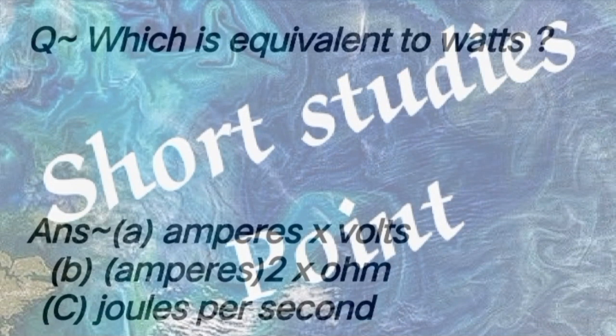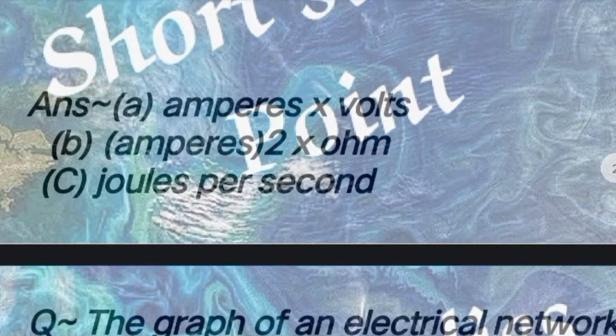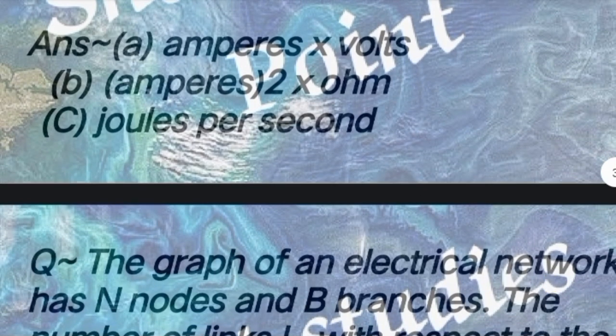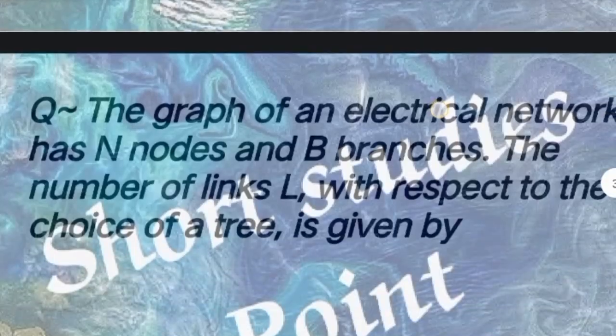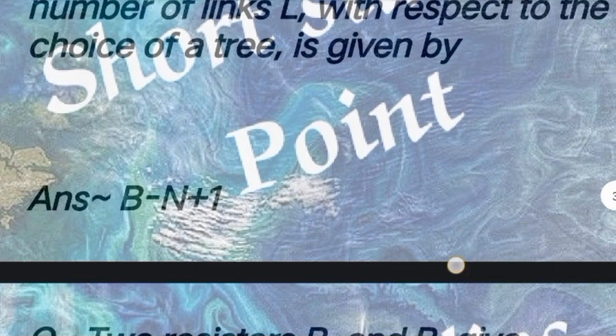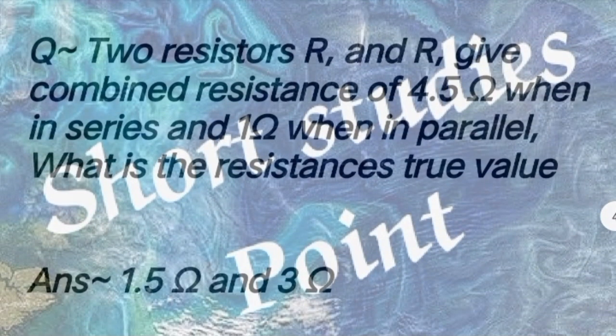Next question: Which is equivalent to watts? Answer: amperes multiplied by volts, ampere squared multiplied by ohms, and joules per second. Next question: The graph of an electrical network has n nodes and b branches. The number of links l with respect to the choice of a tree is given by answer: b minus n plus one.